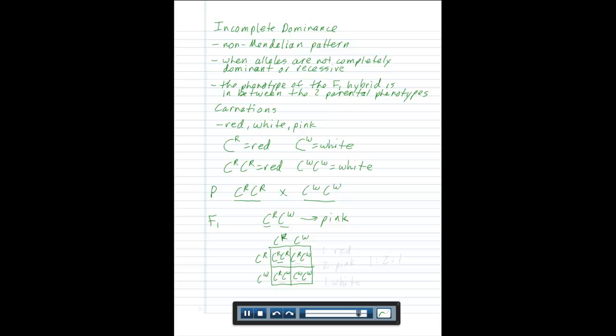Notice what we get. We get one red individual, we get two pink individuals, and we get one white individual. This gives us a one to two to one phenotype ratio that is different than what Mendel observed when he observed traits that were completely dominant and completely recessive.